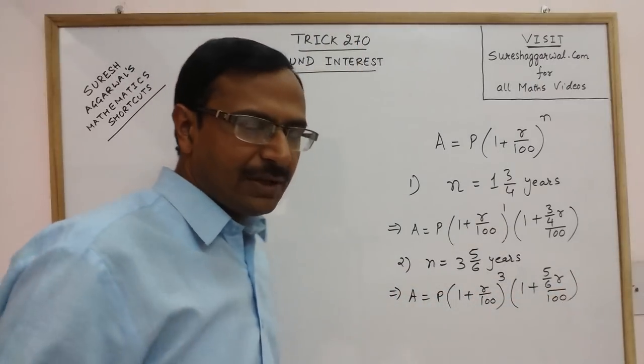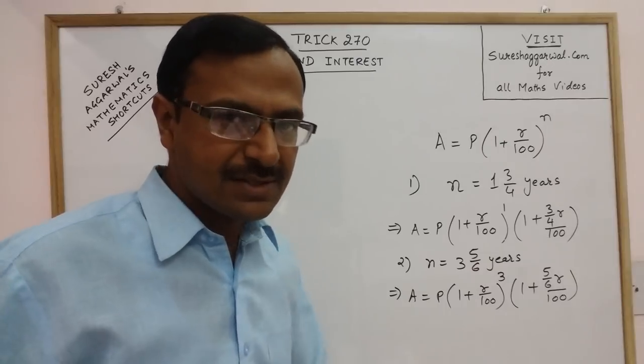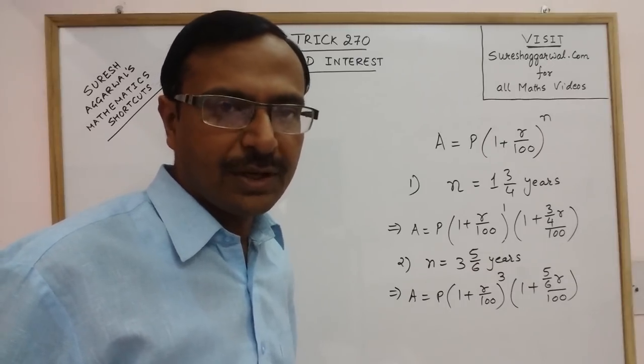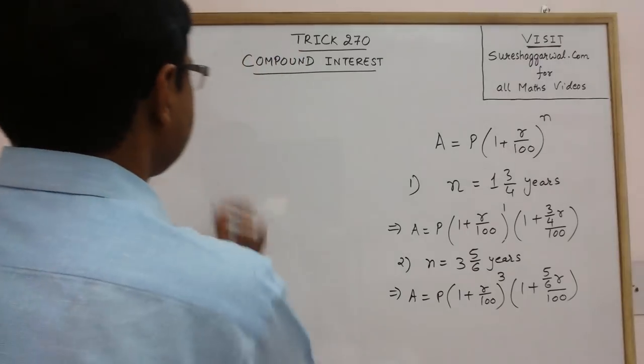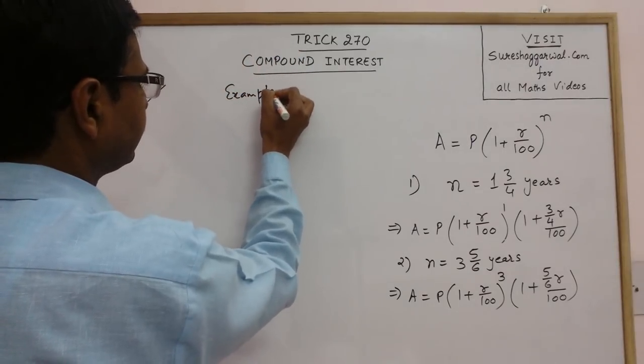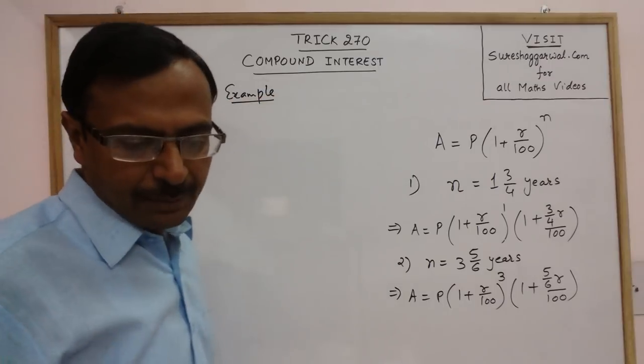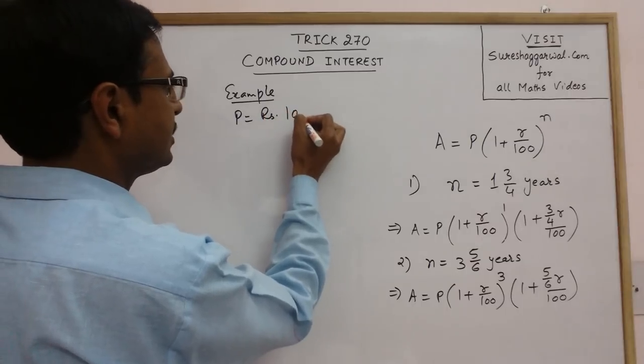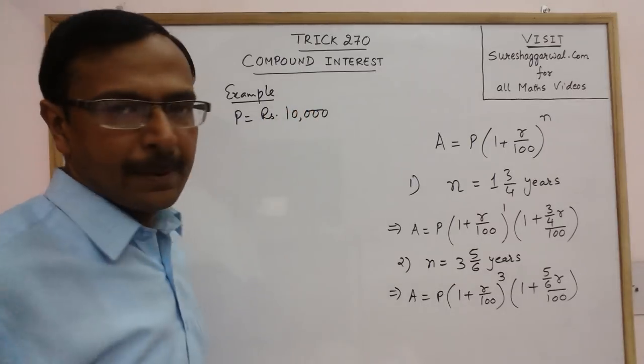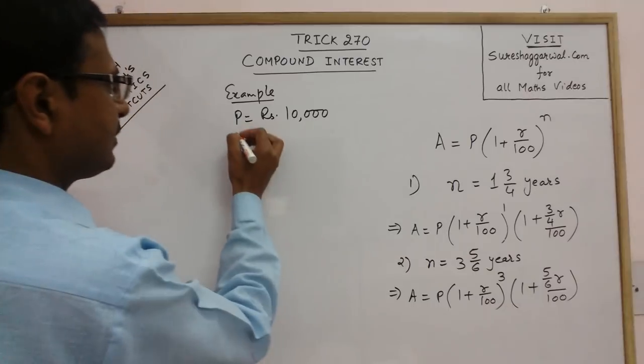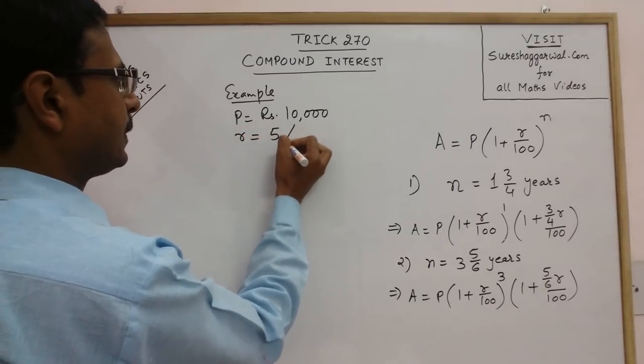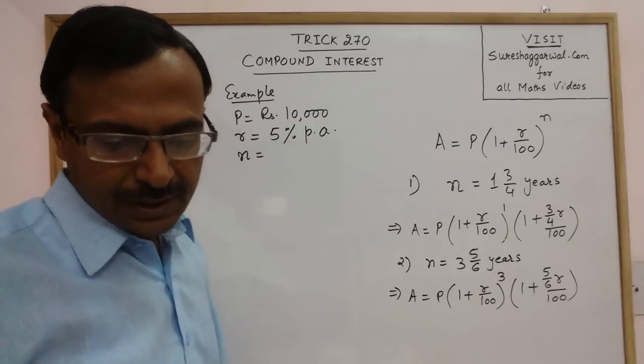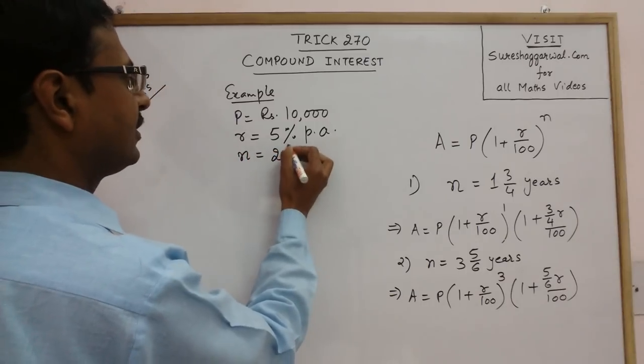Now using this method, we will try and solve one question, then you can practice this method in order to solve questions in the competitive exams. Now see example, the principal amount is Rs 10,000, the rate of interest is 5% per annum and the number of years that is the time is 2.5 years.